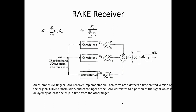Because of the multipath effect, the received signal varies in amplitude, phase, and time delays. The RAKE receiver is used to counteract these multipath effects. It combines all the signals with the help of correlators.